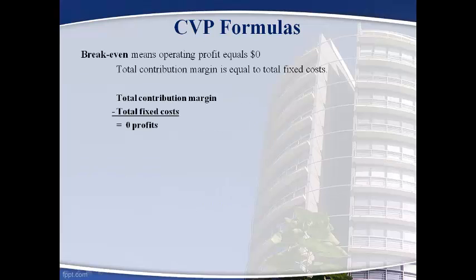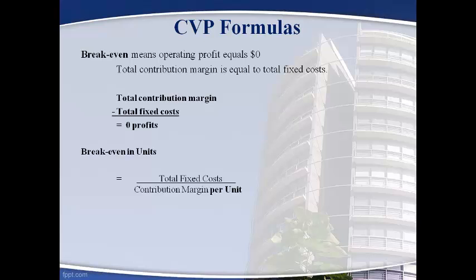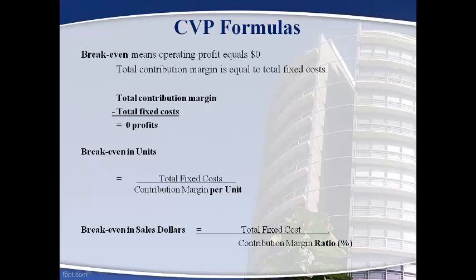Breakeven means that operating income equals zero. Management is concerned about breakeven because it is the minimum sales that must occur to keep the company from losing money. Breakeven occurs when the total contribution margin is equal to fixed cost — total contribution margin less total fixed cost will equal zero when the two amounts are the same. Breakeven in units uses the contribution margin per unit, and breakeven in sales dollars uses the contribution margin ratio.